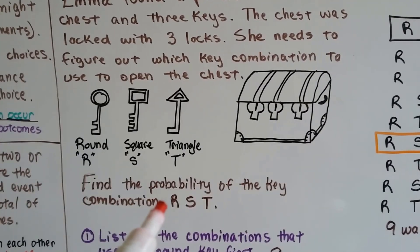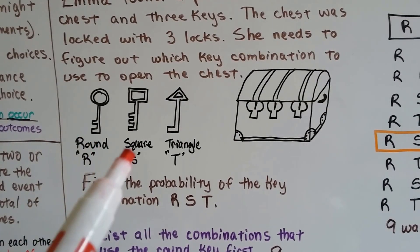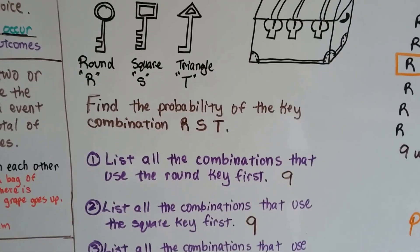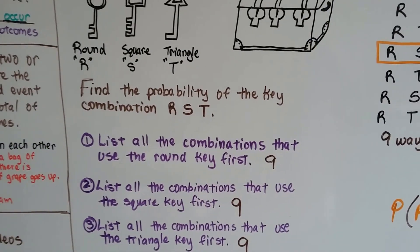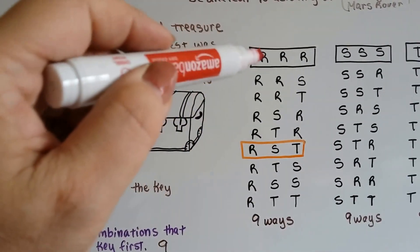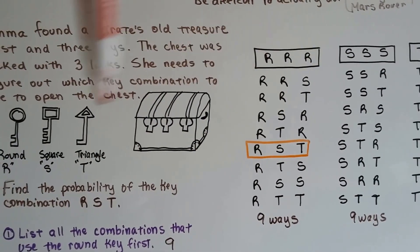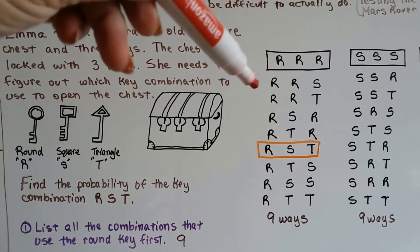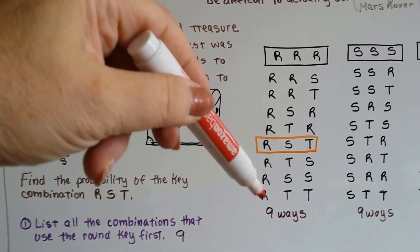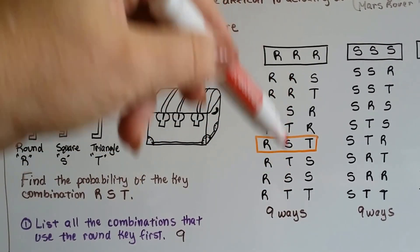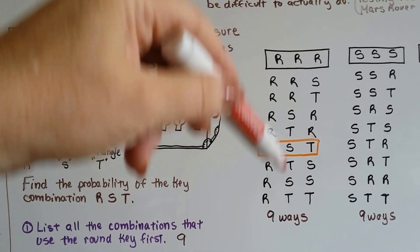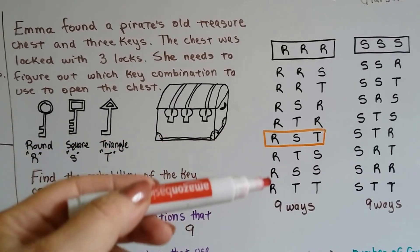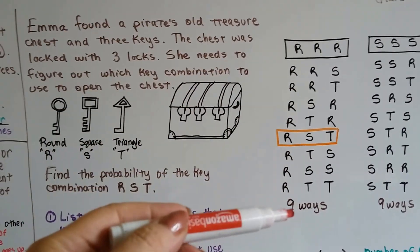We want to find the probability of the key combination being round, square, triangle. First, we list all the combinations that use the round key first. It could be round, round, round — where the square and triangle keys are just extra keys — or all the combinations that start with round and are combined with the square or triangle key. We're hoping the correct one is round, square, triangle. We find there are nine ways to do it with the round key first.